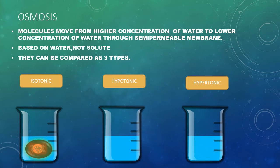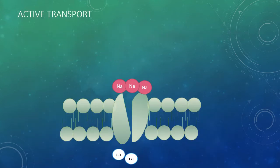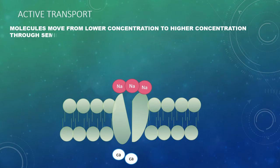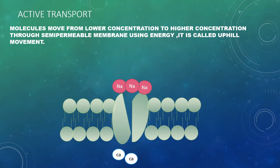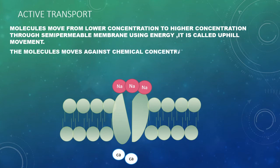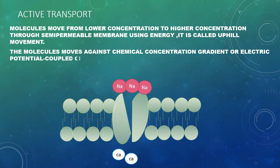In active transport, molecules move from lower concentration to higher concentration through the semi-permeable membrane, requiring energy. It is based on the solute only. This type of transport is known as uphill movement — passive transport is downhill, this is uphill. Molecules move against the concentration gradient and electrical potential, and these are also called coupled chemical reactions.